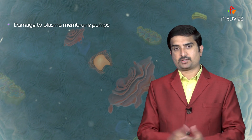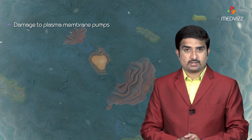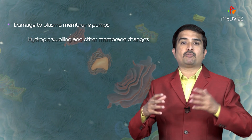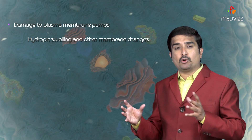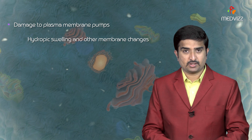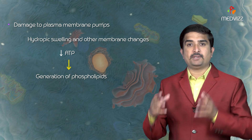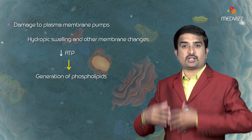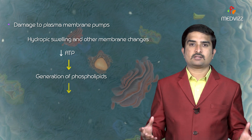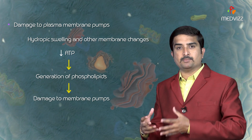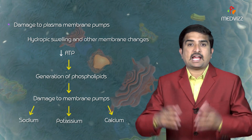The third important event is damage to the plasma membrane pumps, leading to hydropic swelling and other membrane changes. The lack of ATP interferes with the generation of phospholipids from cellular fatty acids, which are required for continuous repair of the membrane. This causes damage to the membrane pumps that regulate sodium, potassium, and calcium.